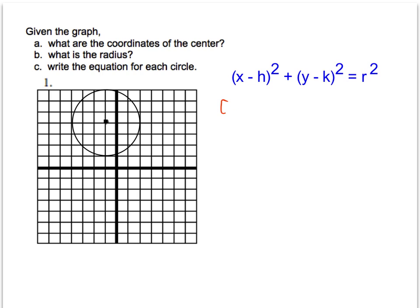At the center of our circle, we're going to find the x value, negative 1, and count up. Positive 4 is going to be our center. Next we're asked to find the radius.